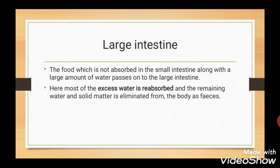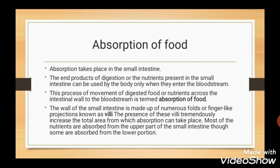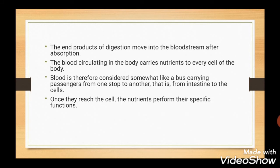Large intestine. Food which is not absorbed in the small intestine reaches the large intestine along with a large amount of water. Here, most of the excess water is reabsorbed and the remaining water and solid matter is eliminated from the body as feces. Absorption takes place in the small intestine. After complete digestion, nutrients present in the small intestine enter the bloodstream — this process is called absorption. The wall of the small intestine has numerous finger-like projections known as villi, which tremendously increase the total area for absorption. Most nutrients are absorbed from the upper part of the small intestine, and some from the lower portion. The blood carries nutrients to every cell of the body where they perform their specific functions.